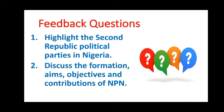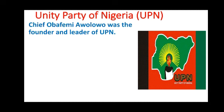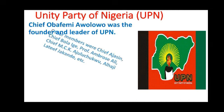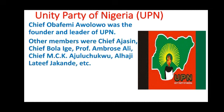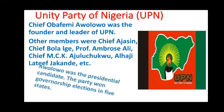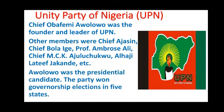The UPN was founded by Chief Obafemi Awolowo. Other members of the party were Chief Ajasin, Chief Bola Ige, Professor Ambrose Alli, Chief M.C.K. Ajonuchukwu, and Alhaji Lateef Jakande, among others. The presidential candidate of the party was Chief Awolowo, and the party won governorship elections in five states.